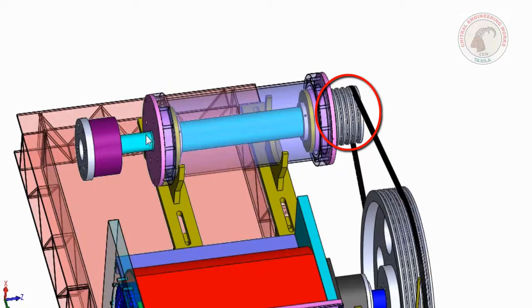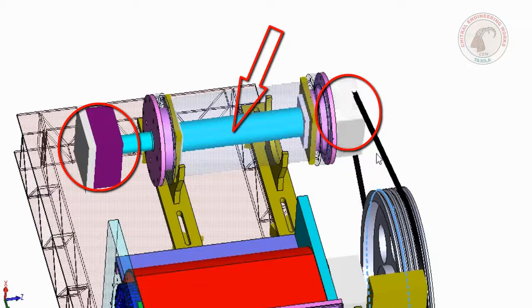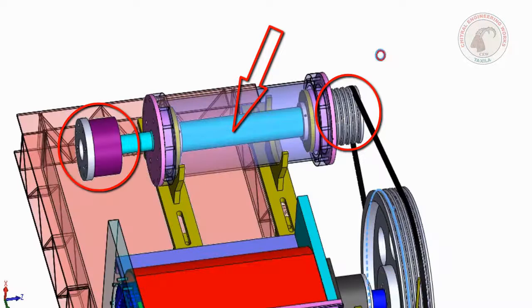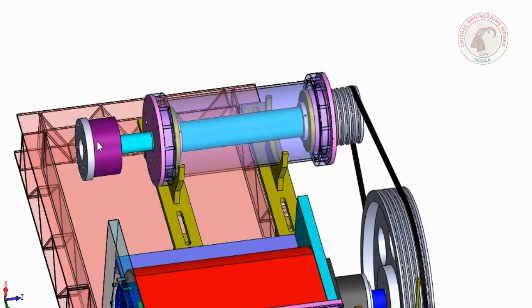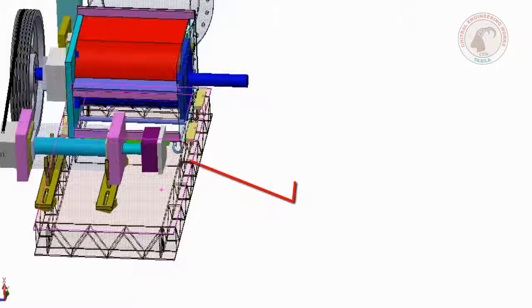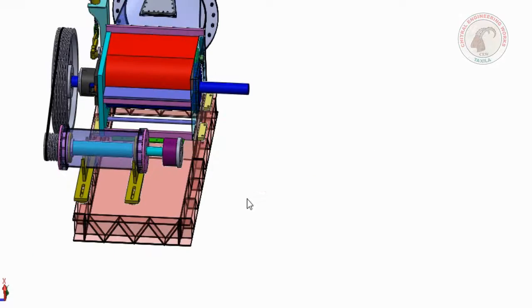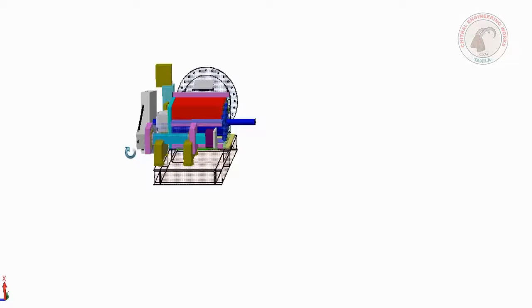This pulley on the counter shaft assembly is connected with the generator coupling by means of this shaft. Generator is coupled with the coupling on this side by universal cross shaft, the same cross shaft which is used in transport vehicles.